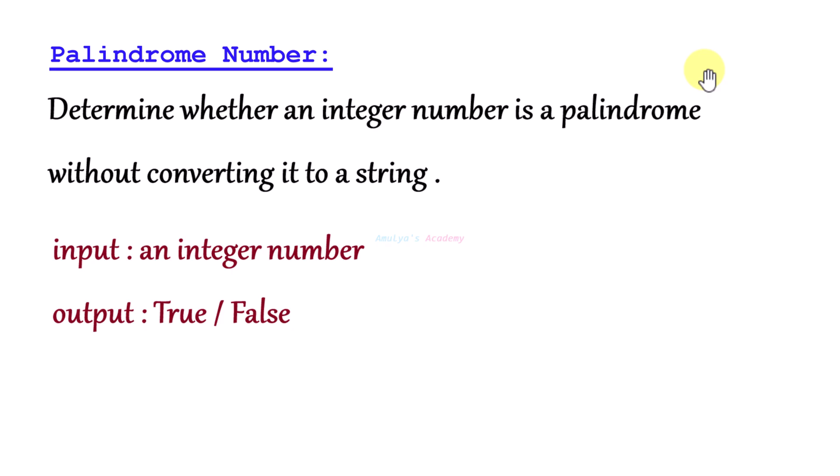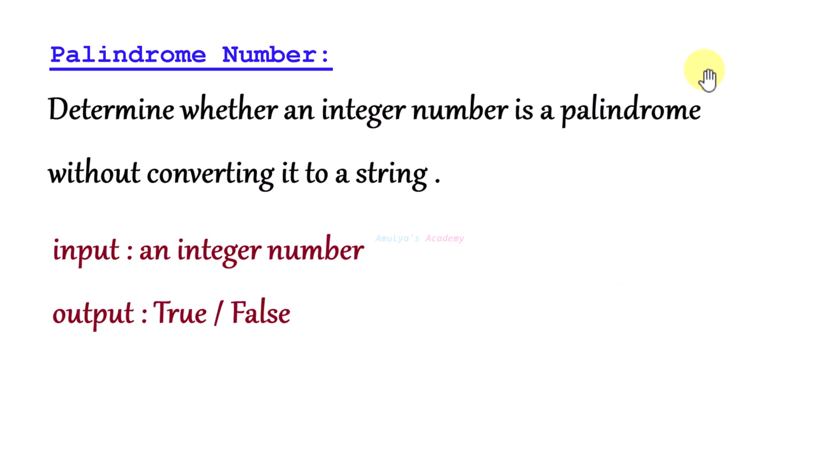The input is an integer number and the output is true or false. For example, if the number is 1221 then it is a palindrome number, so we will get output as true. If the number is 1234, it is not a palindrome number, so we will get output as false.